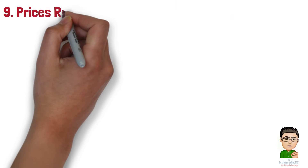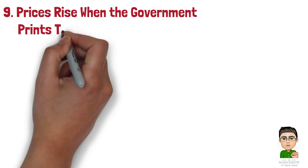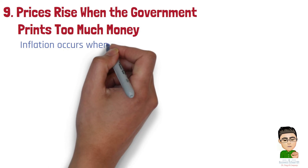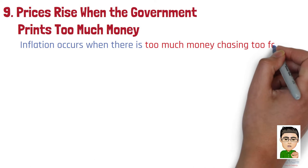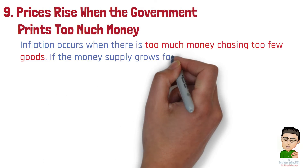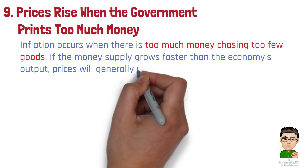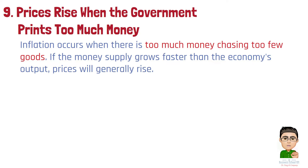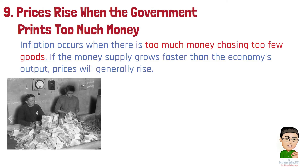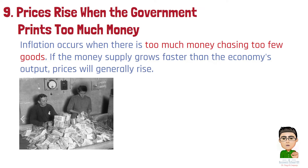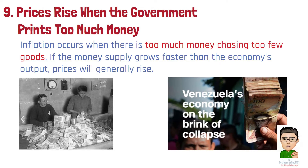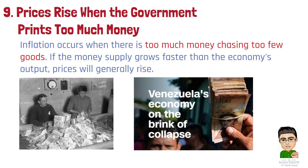Number 9: Prices rise when the government prints too much money. Inflation occurs when there is too much money chasing too few goods. If the money supply grows faster than the economy's output, prices will generally rise. Example 1: The Weimar Republic in Germany experienced hyperinflation in the 1920s, leading to skyrocketing prices and economic instability. Example 2: Venezuela's recent economic crisis, in part due to excessive money printing, has resulted in severe inflation and a decline in living conditions.